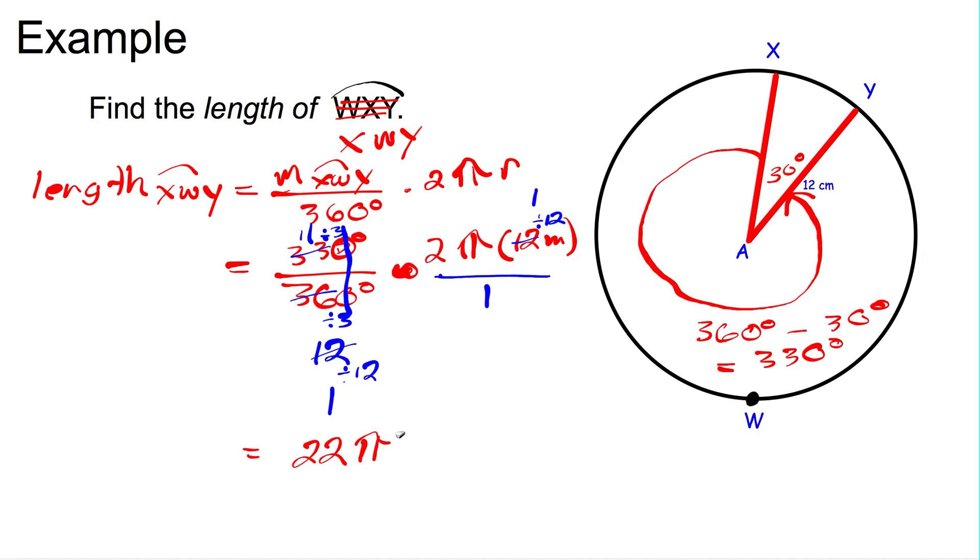If you need to, you can use the pi button on your calculator, or multiply that by 3.14, and what I mean by that is the 22. And that's how we find the measure of arcs using the arc length theorem.